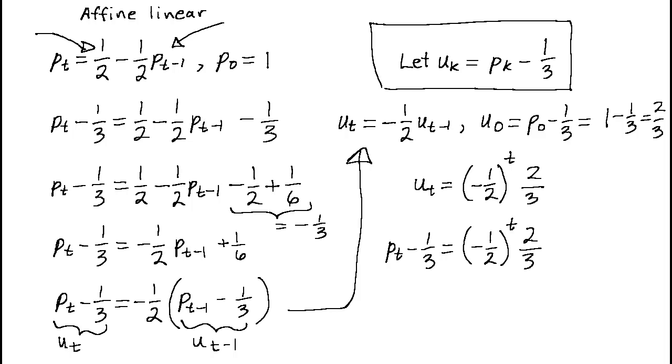Translating back into p, we get the solution we sought. We're left with an explicit relationship between p and t.